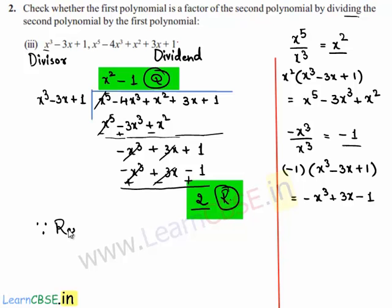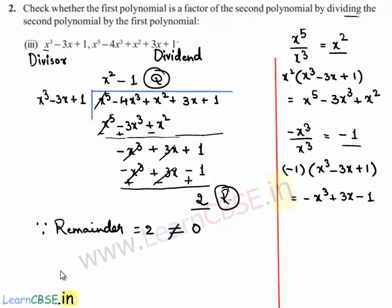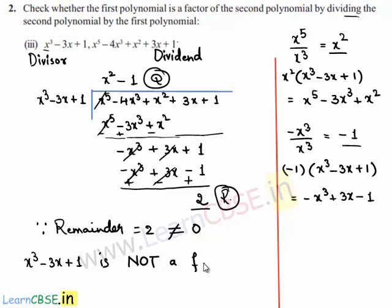Since the remainder is 2, which is not equal to 0, we can say that the first polynomial x³-3x+1 is not a factor of the second polynomial x⁵-4x³+x²+3x+1.